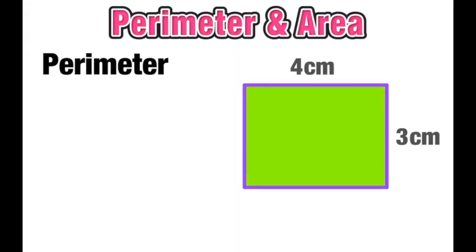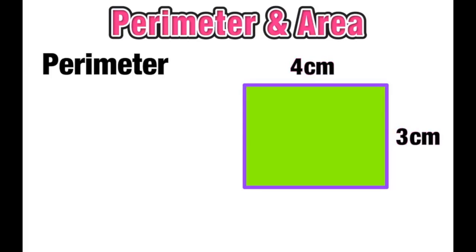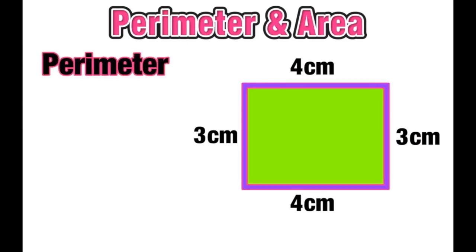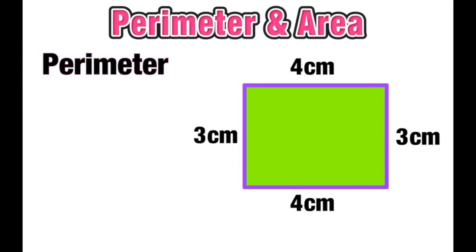Let's go ahead and find the perimeter of a rectangle with a length of four centimeters and a height of three centimeters. I know that the opposite sides in a rectangle are the same length, so I'm going to go ahead and label that. Now I'm totally ready to find the perimeter of this rectangle.